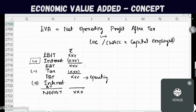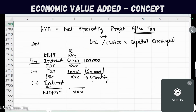For example, if the interest portion is 1 lakh rupees and the tax rate leads to 30,000 rupees tax, then to add back interest into Profit After Tax, we do not add the full 1 lakh. We add only the after-tax interest — that is, 1 lakh minus 30,000 equals 70,000 rupees. So we add back only 70,000 to get NOPAT.